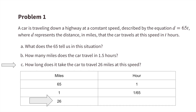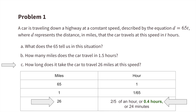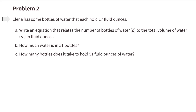To turn 1 mile into 26 miles, we multiply by 26. Since we multiplied the miles by 26, we also multiply 1/65th of an hour by 26. That is 1 divided by 65 times 26, which equals 0.4 hours. It would take a car traveling at this speed 0.4 hours — equivalent to two-fifths or 24 minutes — to travel 26 miles.